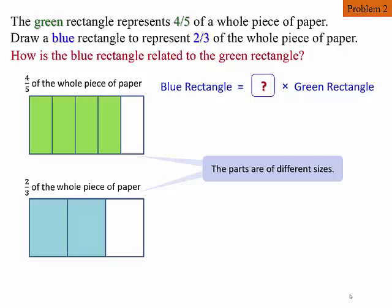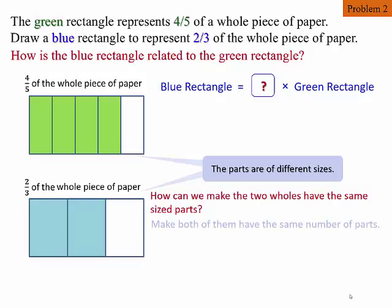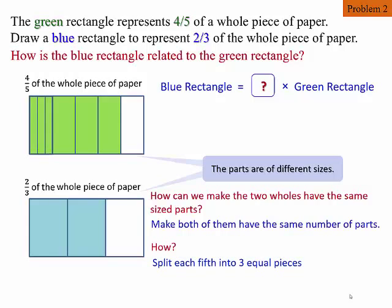What can we do? What we want is to make both wholes have the same size parts. How can we do that? Make both of them have the same number of parts. We could split each fifth into three equal pieces, and then split each third into five equal pieces.